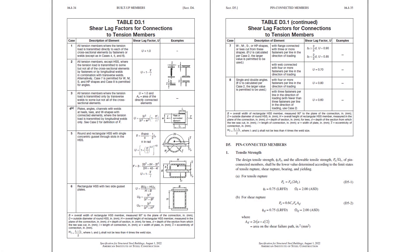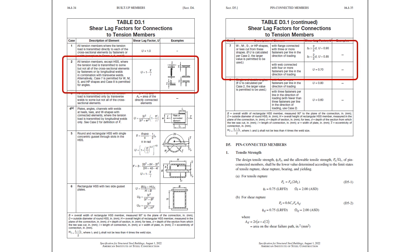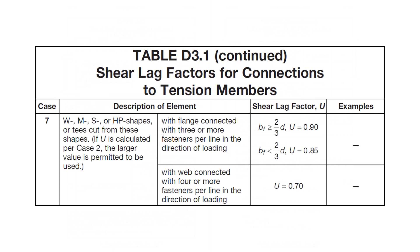The next step is to consider shear lag reduction. To determine the shear lag reduction coefficient, we go to Table D3.1 of the 2022 AISC specification. Two cases apply to our situation. The first is Case 2, where U equals 1 minus x-bar over L. The second is Case 7, where U equals either 0.9 or 0.85 depending on the ratio of flange breadth to section depth. Since our flanges are connected with more than three bolts in the direction of loading, if b sub f is greater than two-thirds times d we take U equal to 0.9, otherwise U equals 0.85.